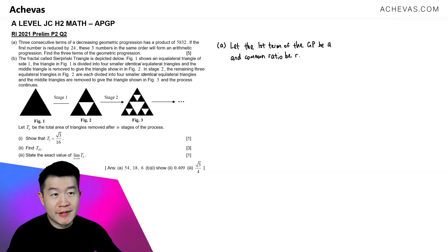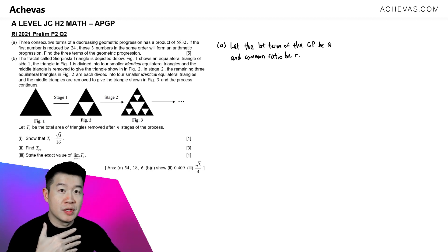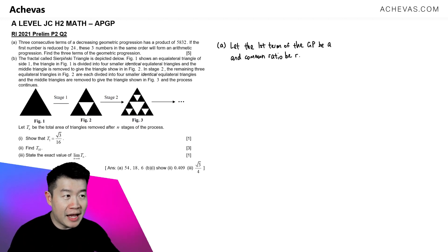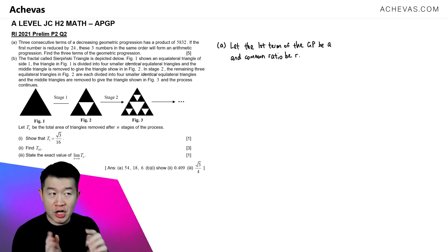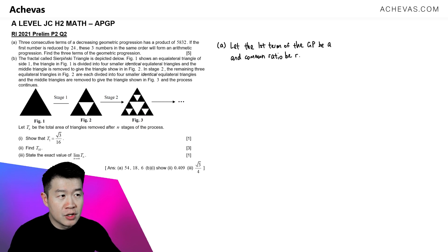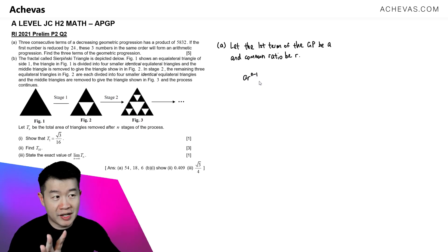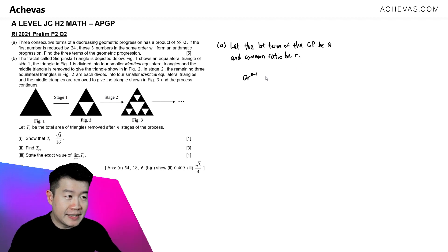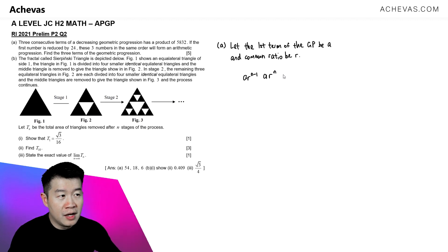Since this question is talking about three consecutive terms of a decreasing GP, we want to let the first term of the GP be A and the common ratio be R. For these three terms, we quote them as general terms: the first term can be AR to the power of M minus 1, the next term is AR to the power of M, and the last term is AR to the power of M plus 1.